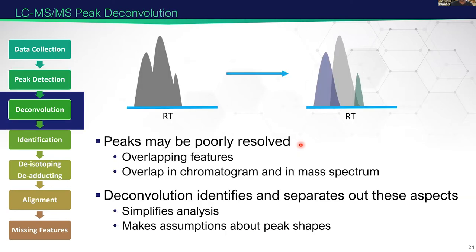We then go on to deconvolution, where we accept that in the real world our peaks are not going to be baseline resolved all the time. Deconvolution takes something that might look like three overlapping peaks and identifies and separates out what those three features actually are in terms of true area and true apexes. It simplifies downstream analysis quite a lot, but it does make assumptions about what peak shapes you have.